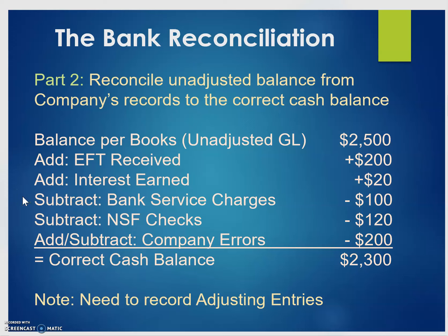We subtract out any bank service charges. We also subtract out non-sufficient fund checks — those are checks written by customers that were not valid because the customer didn't have enough money in their account. Then we add or subtract any company errors. In this example, there is a company error that reduces the amount of cash recorded. We should arrive at the same correct cash balance of $2,300.